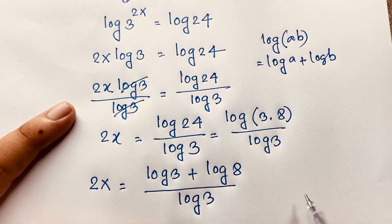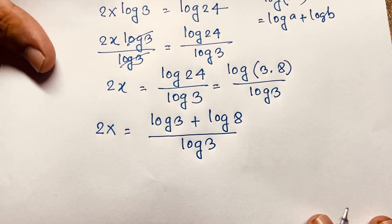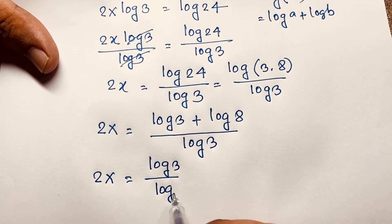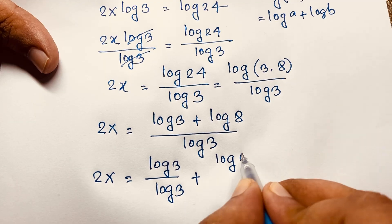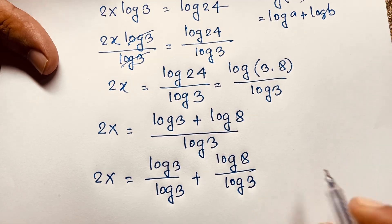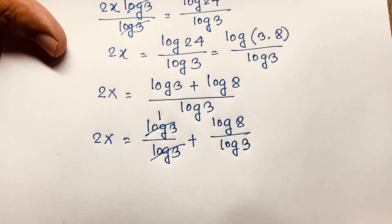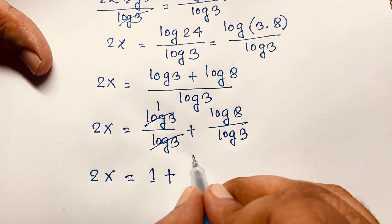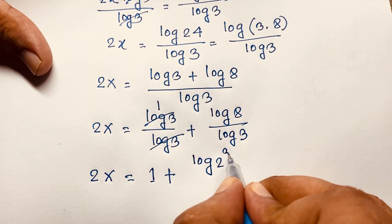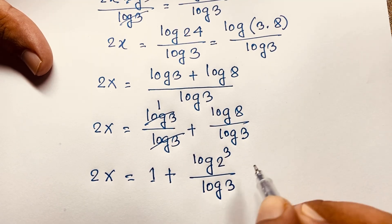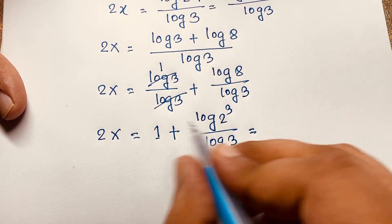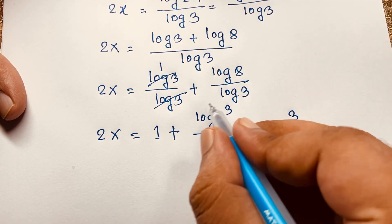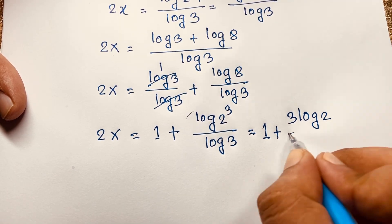Now I separate this fraction. It will be 2x equals log 3 over log 3, plus log 8 over log 3. Now here log 3 over log 3 cancels out to give 1. So this expression becomes 2x equals 1 plus log 8 over log 3. If I evaluate log 8, it will be log of 2 to the power 3 over log 3.